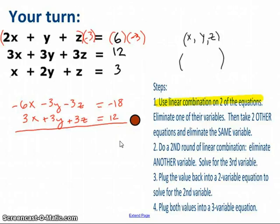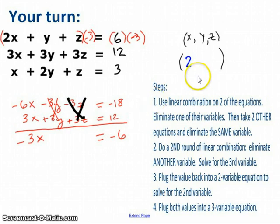Okay, I'm going to assume that you did that, and I'm going to assume that what you saw is that, as it turns out, not only the y's ended up canceling, and that's what I wanted to have happen, but it turned out that the z's ended up canceling. So what I was left with was negative 3x equals negative 6, which means that x is 2, and I can go ahead and put that in as part of my answer. So now I'm ready to do another round of linear combination.